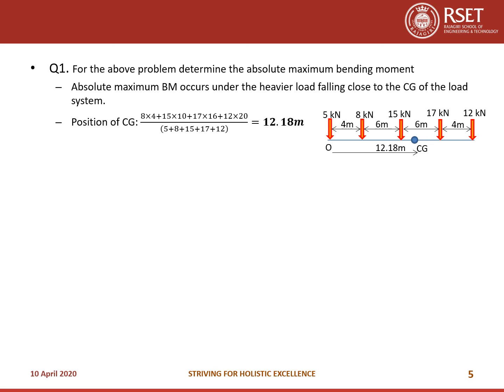The absolute maximum bending moment occurs under the heavier load falling close to the CG. Looking at 15 and 17 kN, the CG lies between them. The 15 kN load is at a distance of about 2.18 meters from the CG, and 17 kN is about 4 meters away. So the absolute maximum bending moment will occur under the 15 kN load.